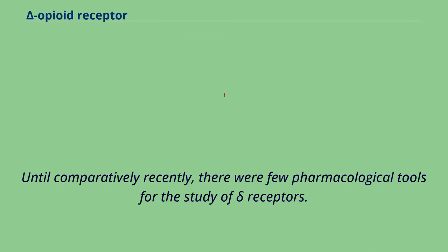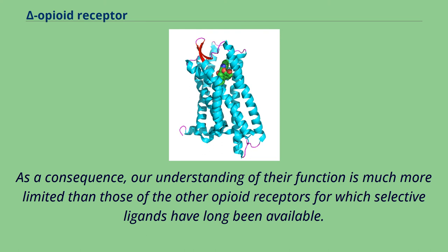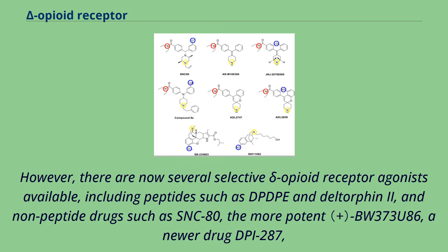Until comparatively recently, there were few pharmacological tools for the study of Delta receptors. As a consequence, our understanding of their function is much more limited than those of the other opioid receptors for which selective ligands have long been available. However, there are now several selective Delta opioid receptor agonists available, including peptides such as DPDPE and Deltorphin-2, and non-peptide drugs such as SNC-80 and the more potent B.W.